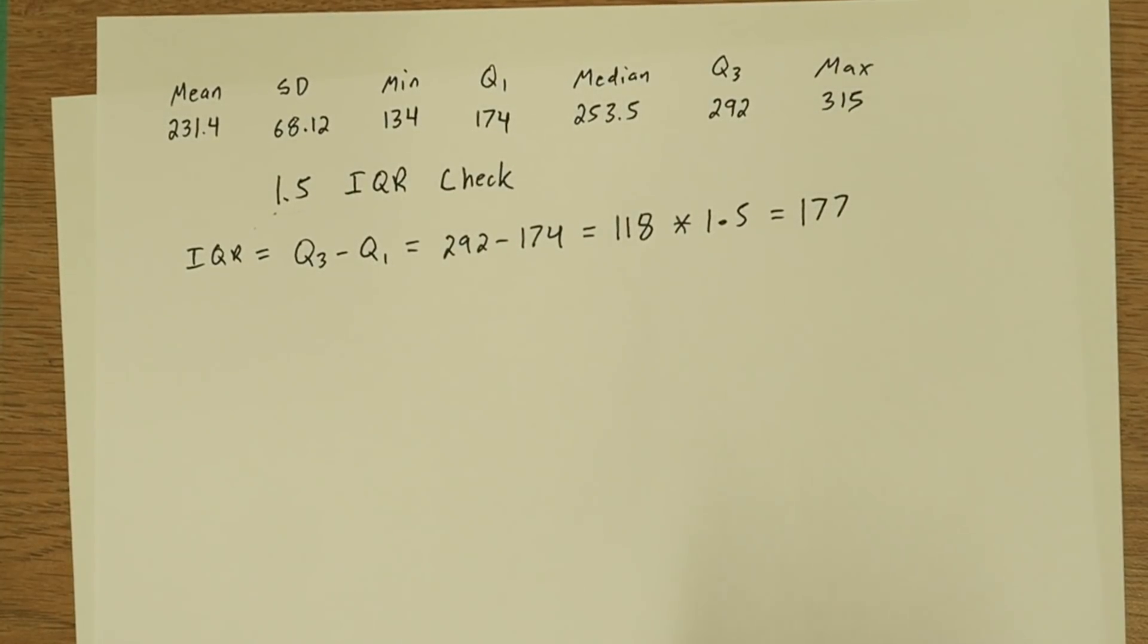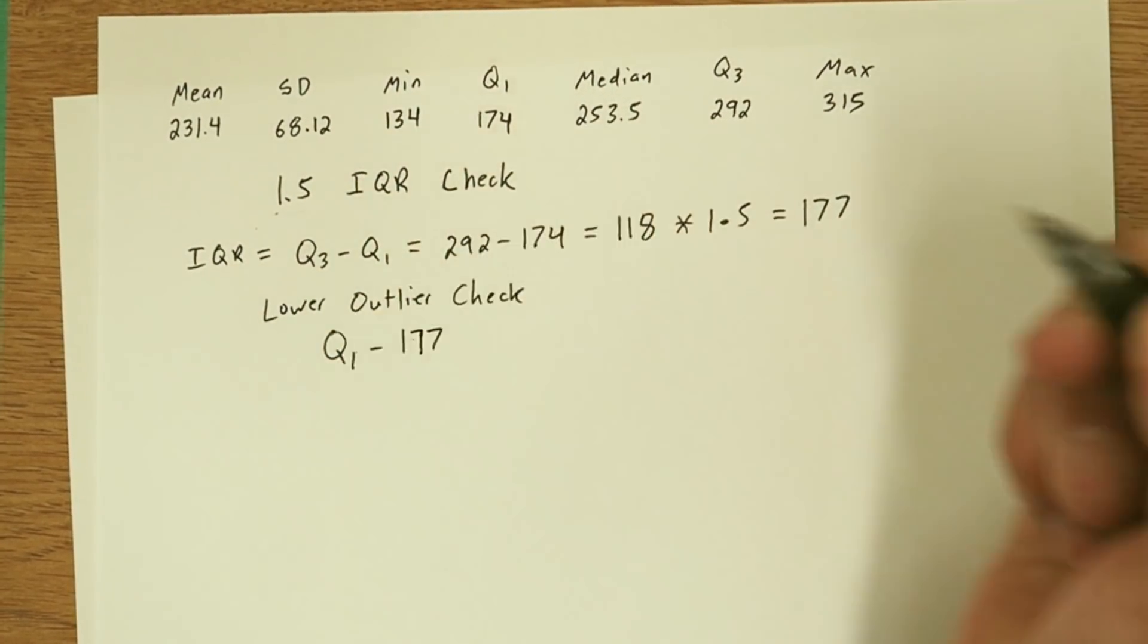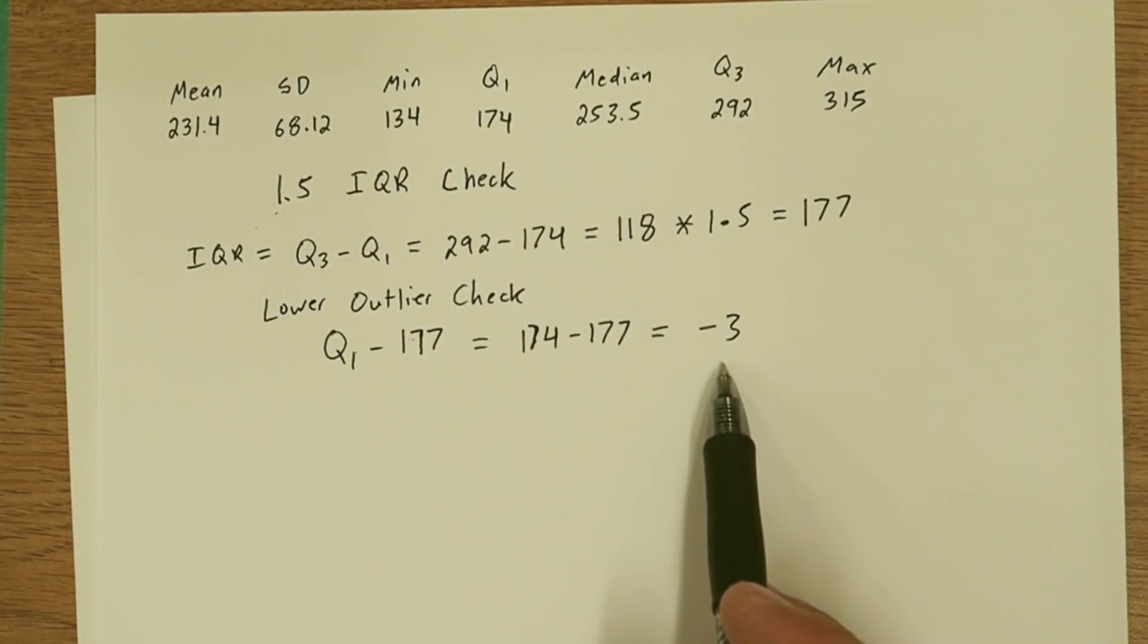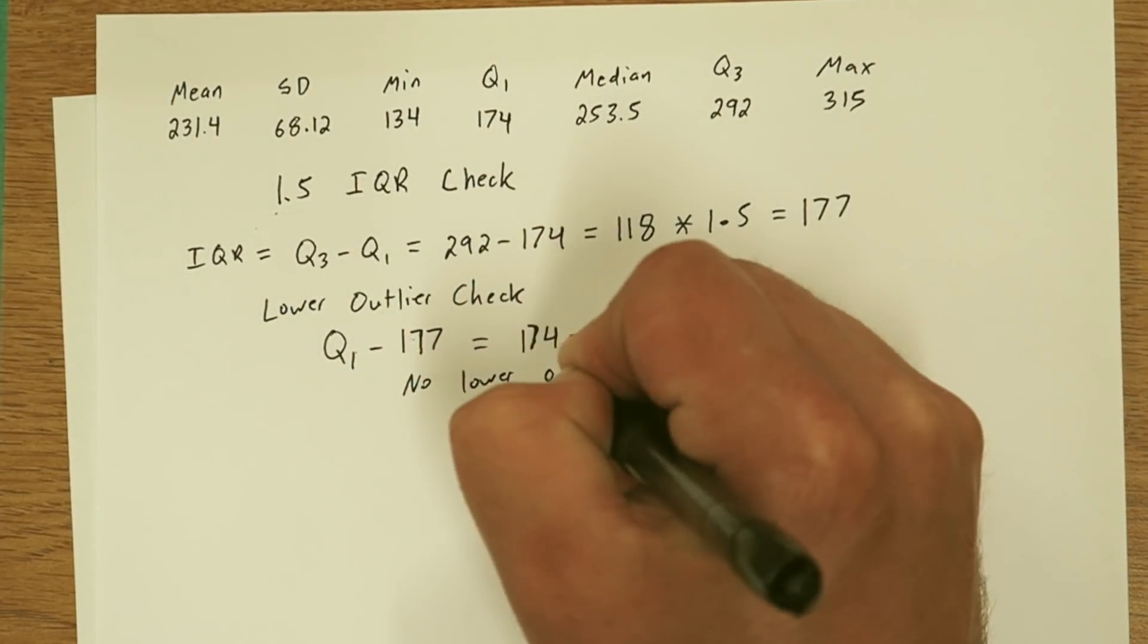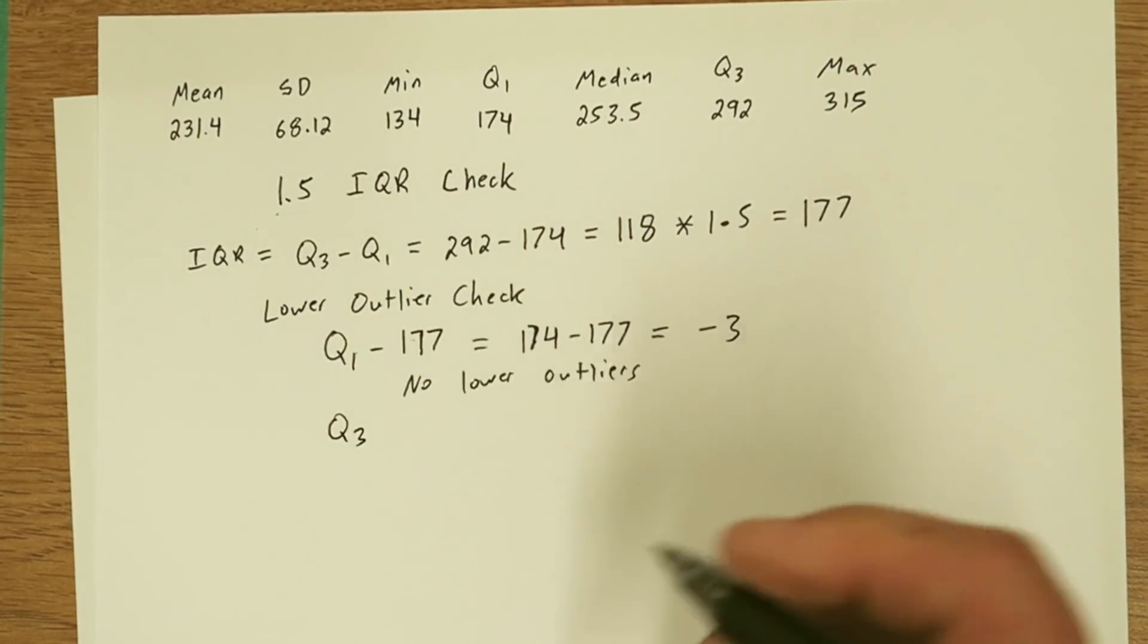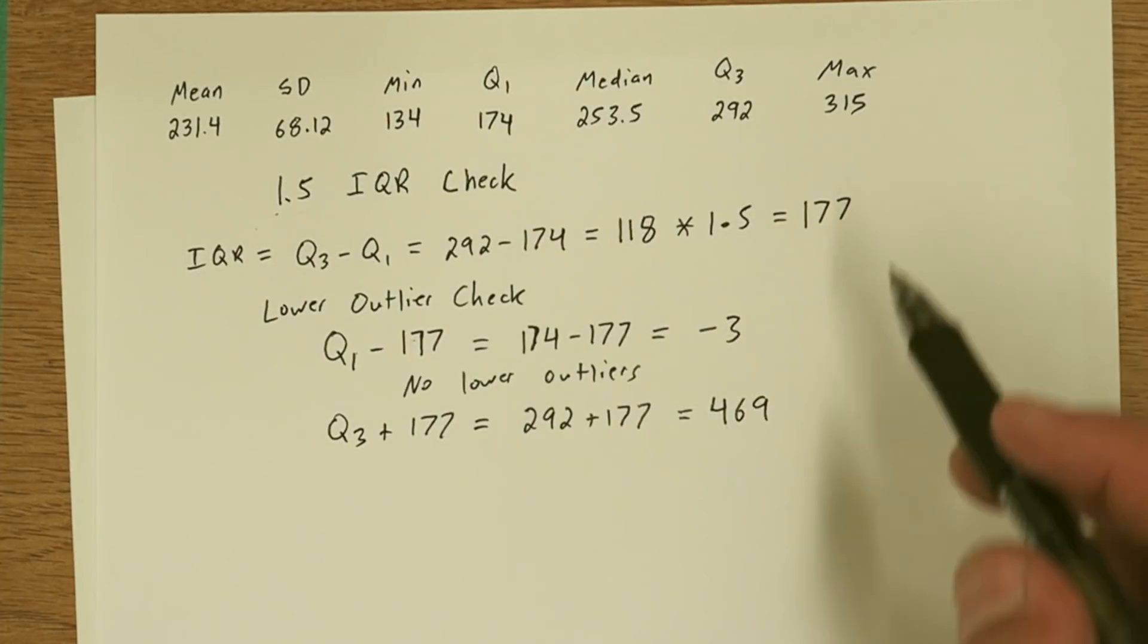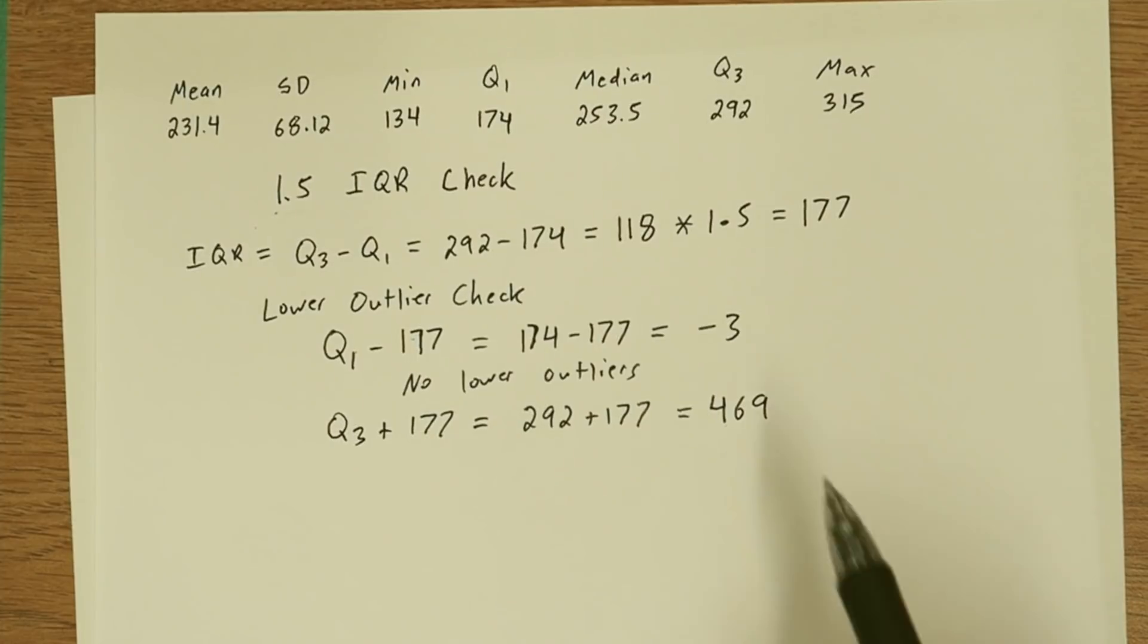Now 177 establishes how far from quartile 1 or quartile 3 a data point would need to be to be considered an outlier. So let's check for lower outliers. We're going to take quartile 1 and subtract 177 from it, and we get negative 3. Since there's no square footages that are negative 3 or less, there's no lower outliers. Now let's check for upper outliers. We can see that the maximum square footage is 315, but to be an upper outlier, you'd have to be 469 or above. So there is also no upper outliers.